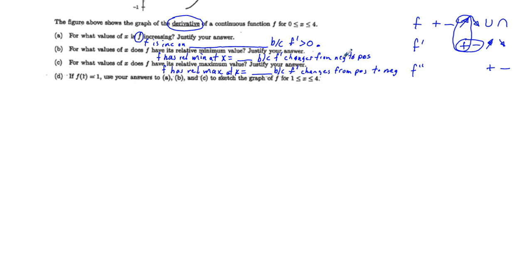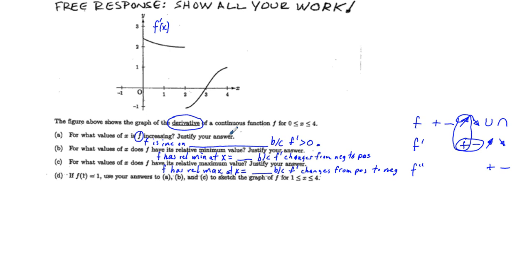For Part A, we're looking for where f prime is greater than zero. Here f prime is above the x-axis between 0 and 2, so the interval is (0, 2). And also between x equals 3 and x equals 4 — I'm circling this portion of the graph above the x-axis — so union (3, 4). For Part B, f has a relative minimum at x equals 3 because the graph of f prime goes from below the x-axis to above the x-axis at x equals 3, changing from negative to positive.